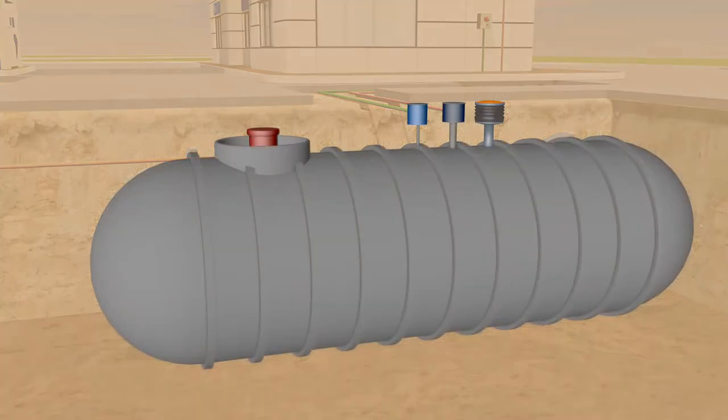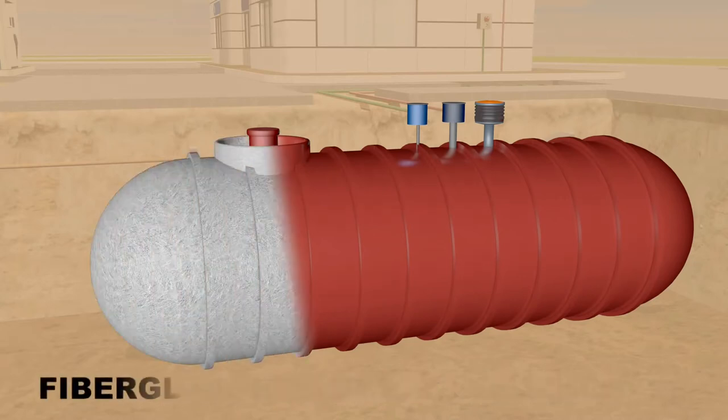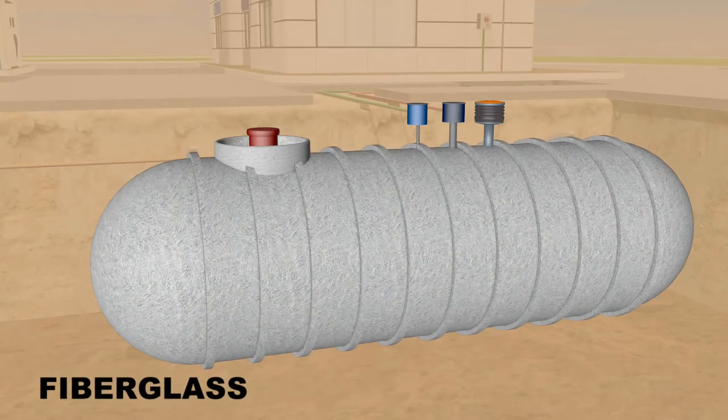Thanks to a nationwide upgrade campaign, the vast majority of underground storage tanks and pipes feature corrosion-resistant coatings, or they're made entirely of resistant materials, like fiberglass.